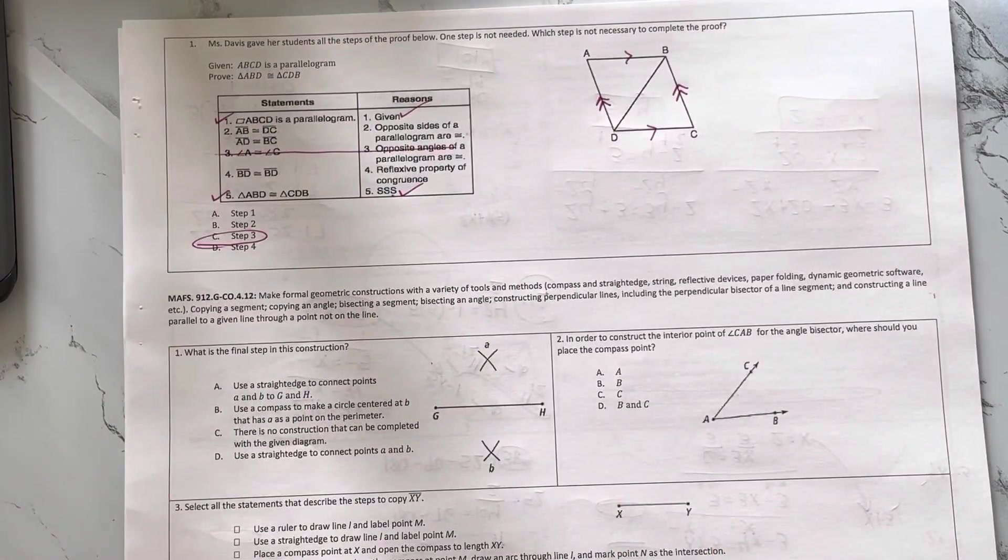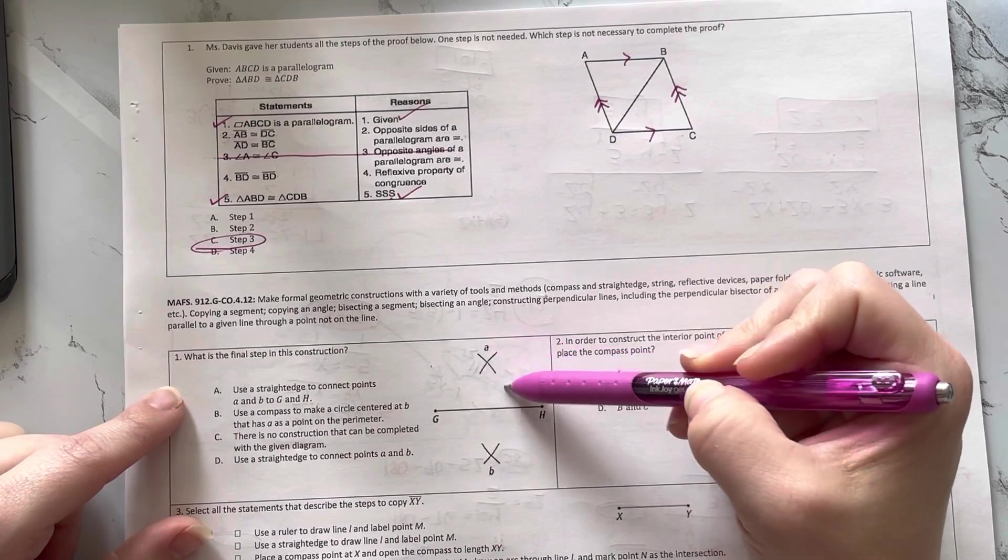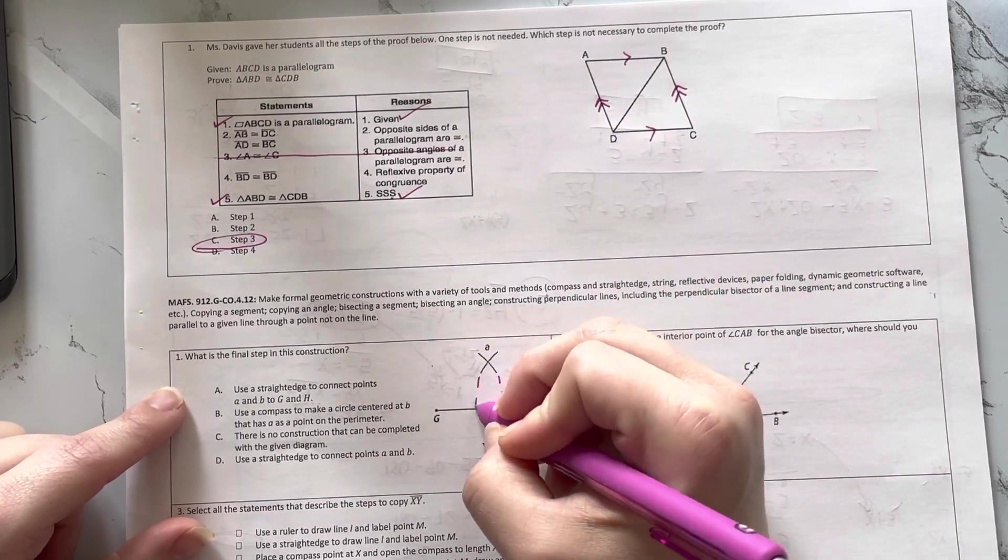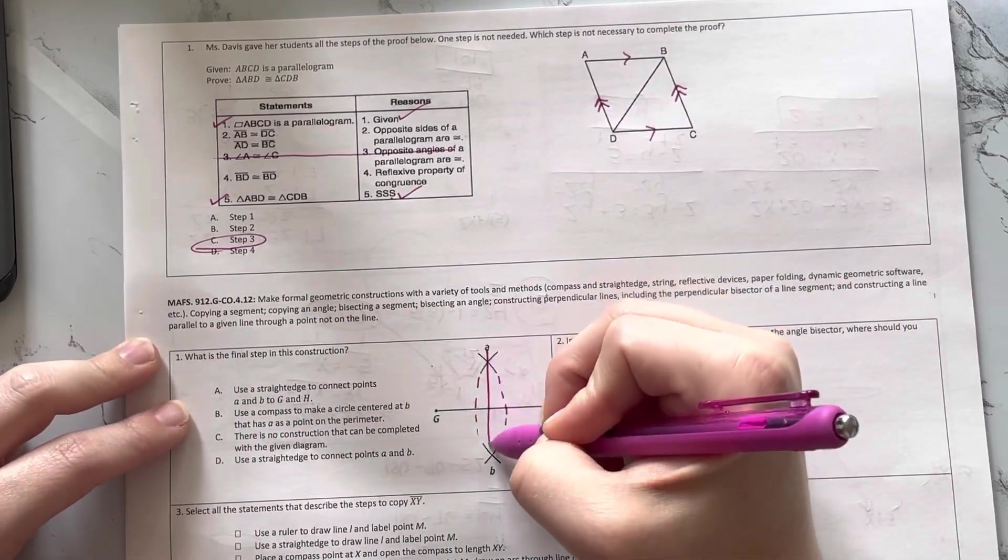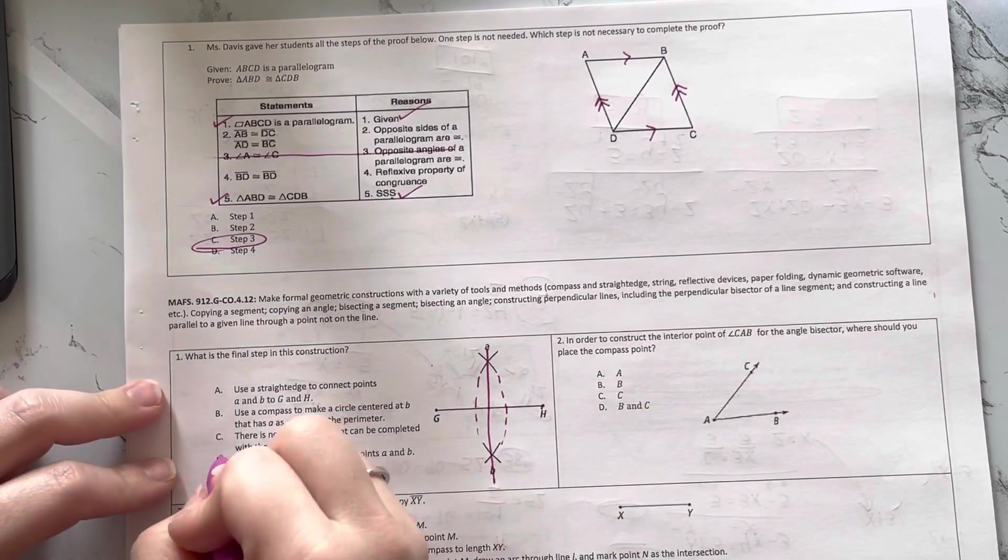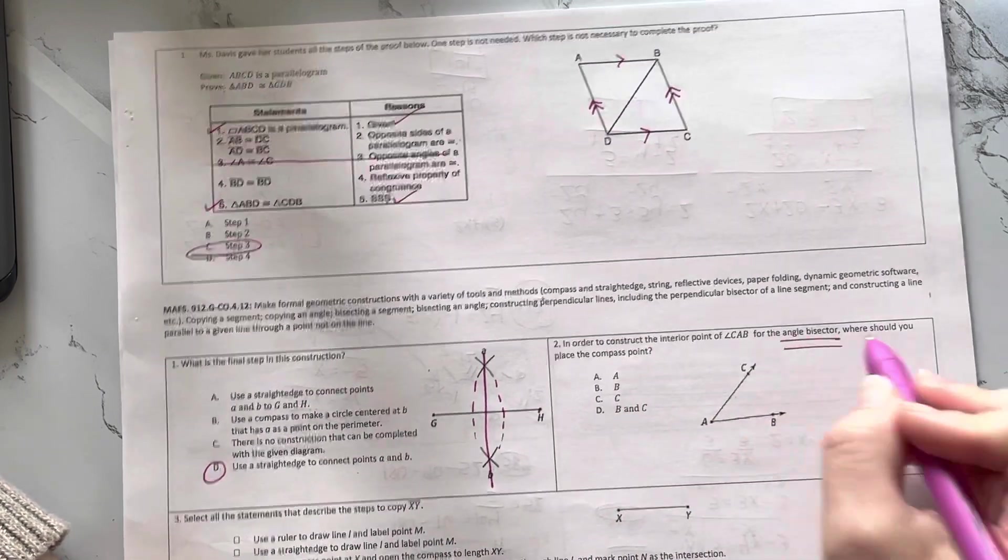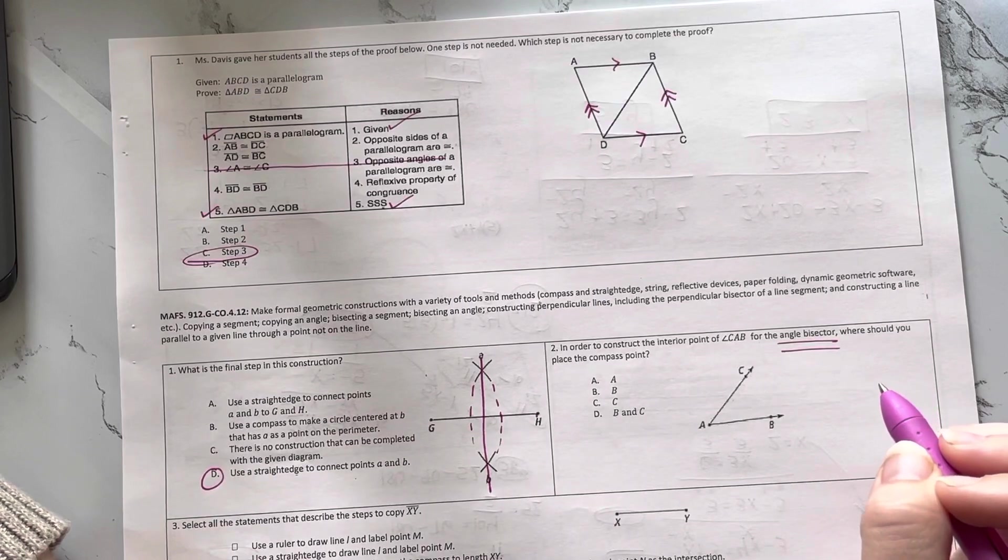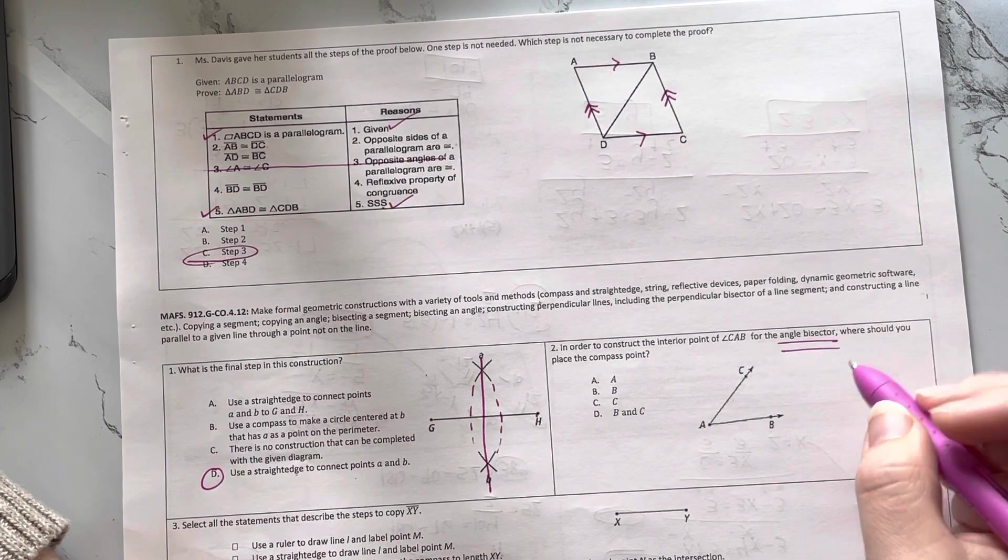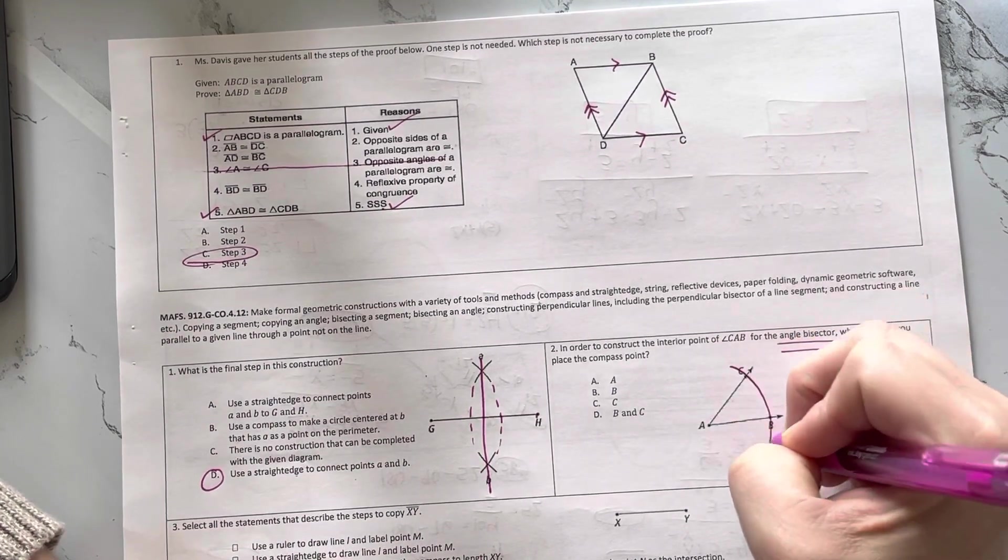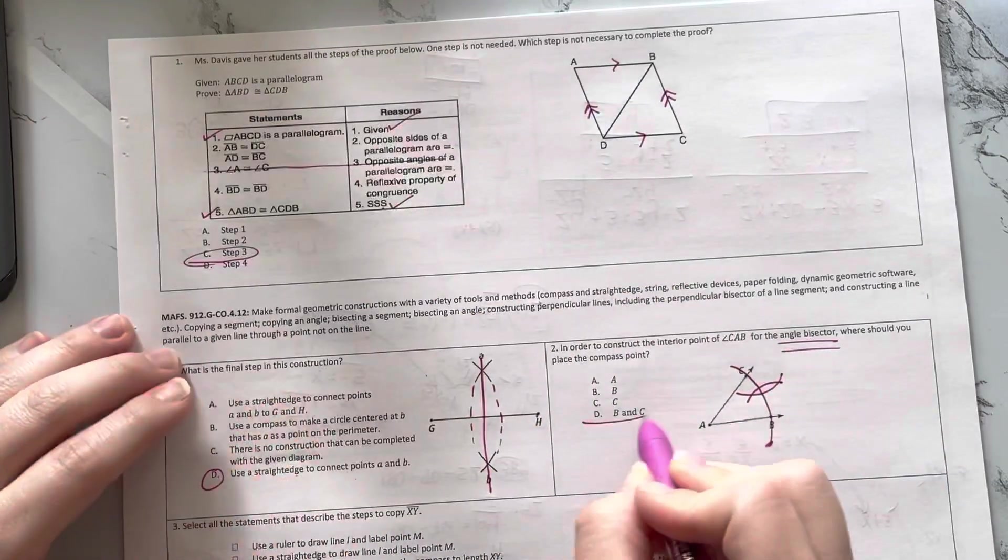Alright, I'm using constructions here. So this says, what is the final step in this construction? So I know I have a segment and I have these arcs that were formed, right, by placing the compass here and here. And when they cross, I should be connecting these intersection points. So let's see, use a straight edge to connect points A and B. Alright. So in order to construct the interior point of CAB for the angle bisector, where should you place the compass? I need to place my compass at B to draw an arc this way and C to draw an arc this way. So B and C.